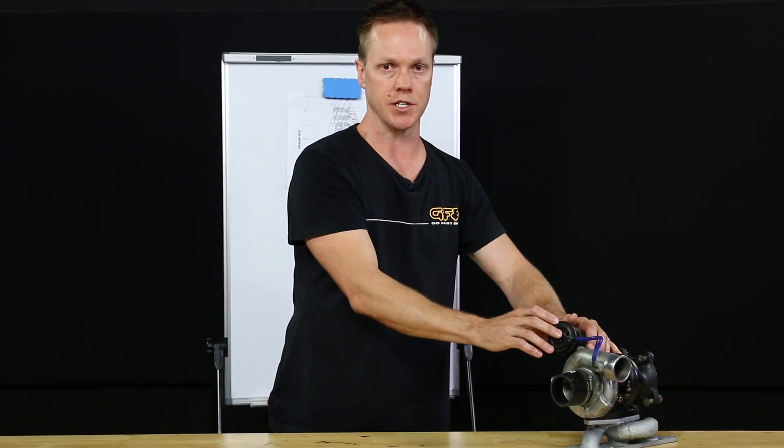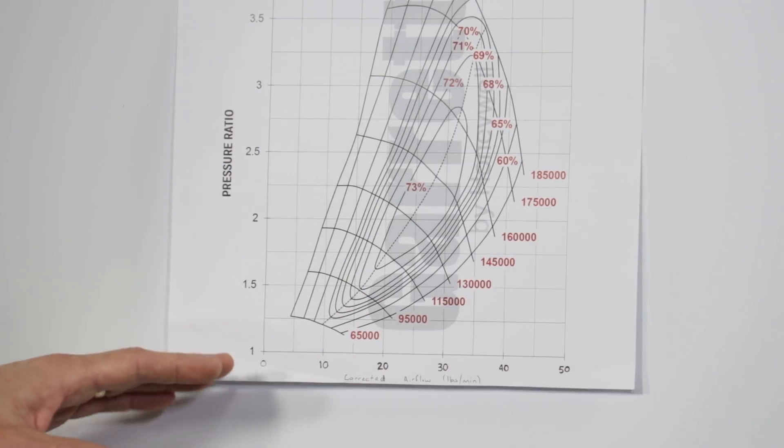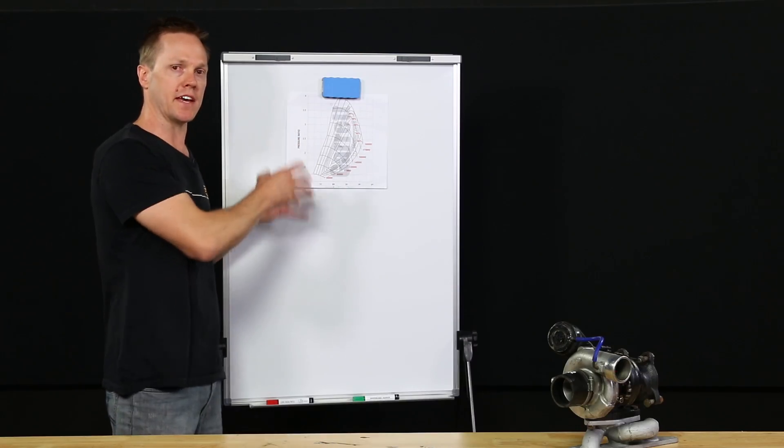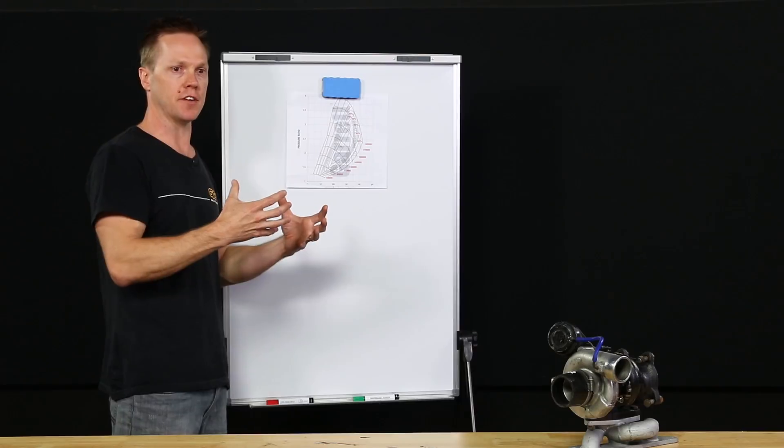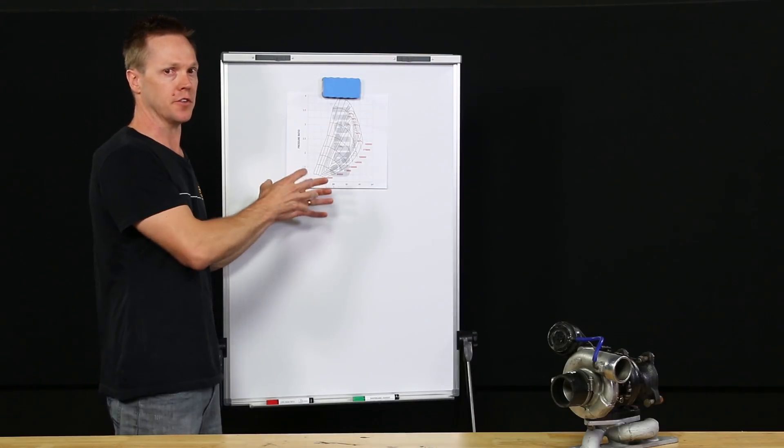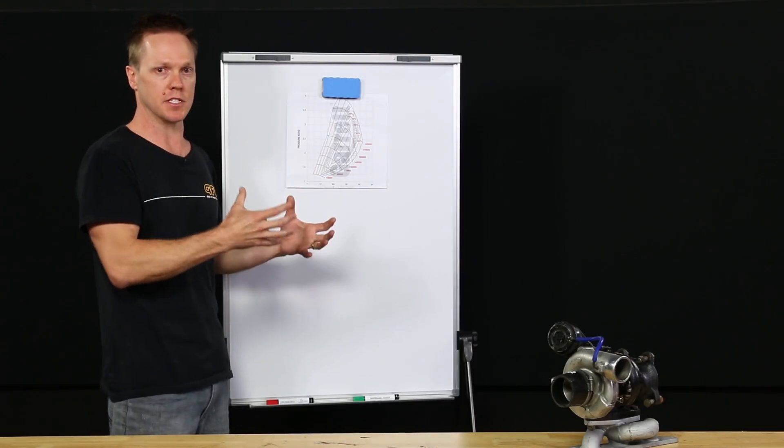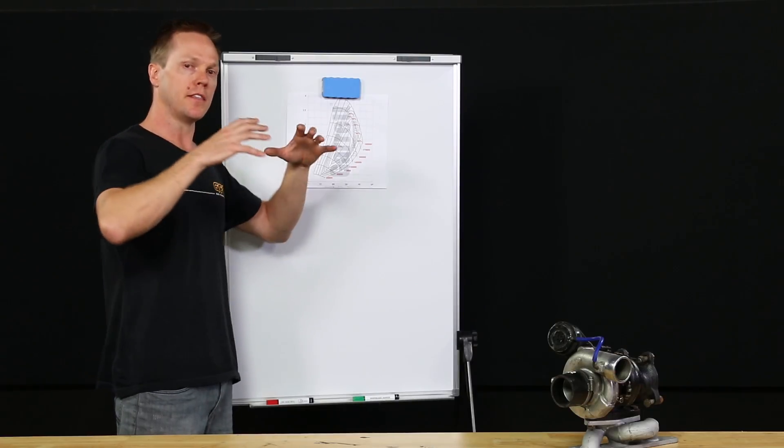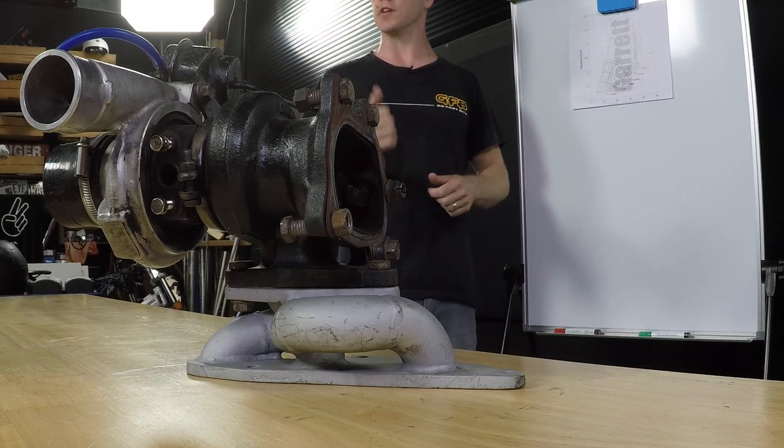So along the bottom axis, we have corrected airflow. Now this is the amount of air, the volume or the mass of air. You'll see it in two different units here. Sometimes it's volume, sometimes it's mass. But either way, it is purely the amount of air going through the compressor.